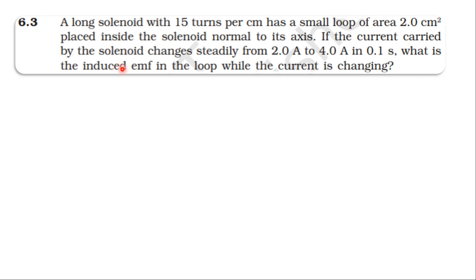From the textbook on electromagnetic induction, topic 6.3, question 6.3: A long solenoid with 15 turns per centimeter has a small loop of area 2 centimeter square placed inside the solenoid normal to its axis. If the current carried by the solenoid changes steadily from 2 ampere to 4 ampere in 0.1 second, what is the induced EMF in the loop while the current is changing?